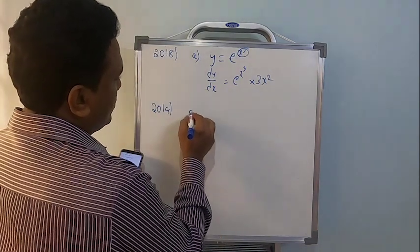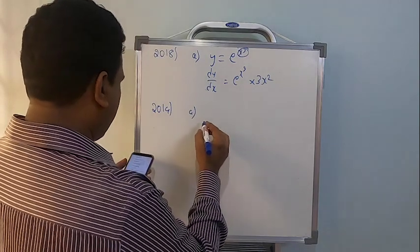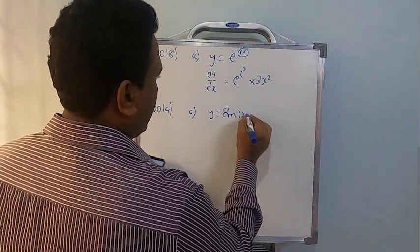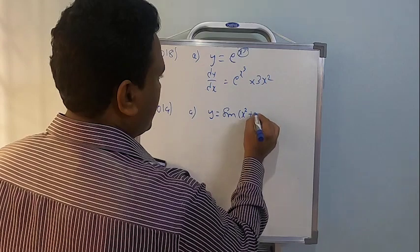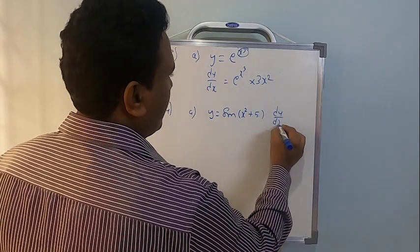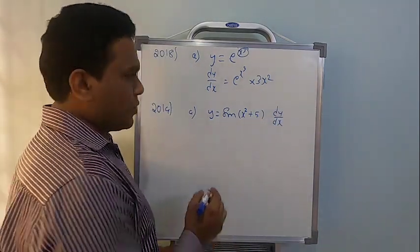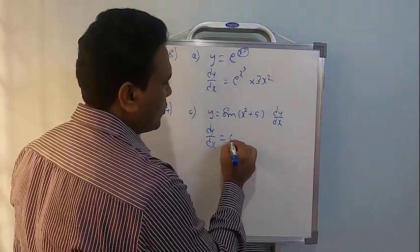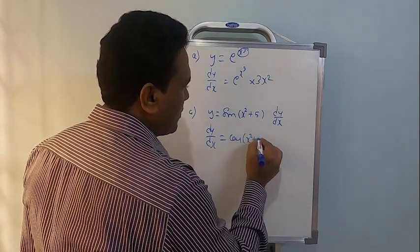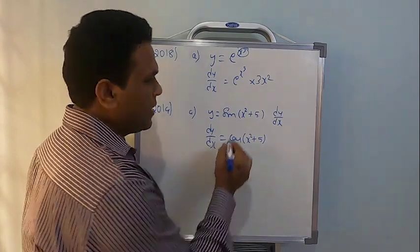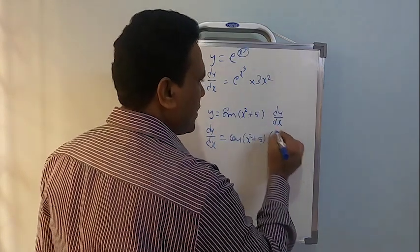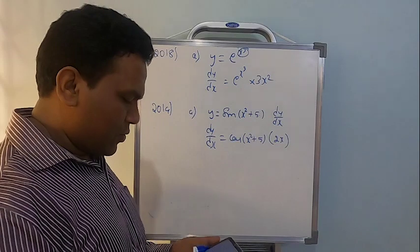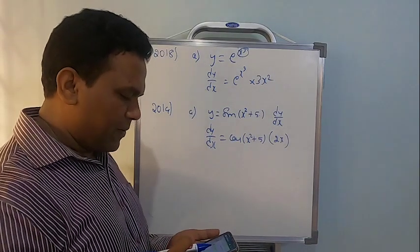In the 2019 annual examination (March), y = sin(x² + 5), find dy/dx. dy/dx = cos(x² + 5) × 2x, since differentiation of x² is 2x and 5 becomes 0. That is the 2019 paper.